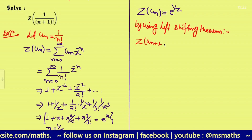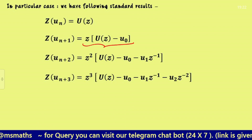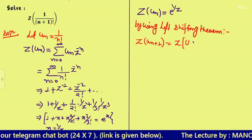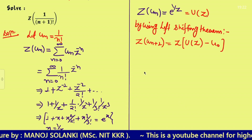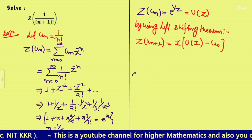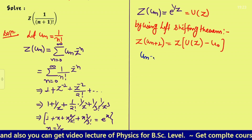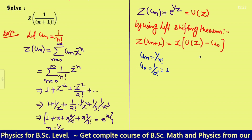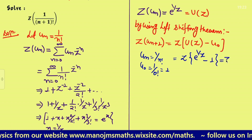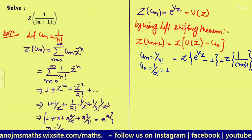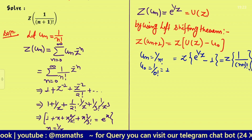By using the left shifting theorem, Z{u(n+1)} = z·U(z) − u(0). We have U(z) = e^(1/z) and u(0) = 1/(0!) = 1. Therefore Z{u(n+1)} = z·e^(1/z) − 1. This is the Z transform of 1/((n+1)!), and in this way we can easily calculate values using the left shifting theorem.